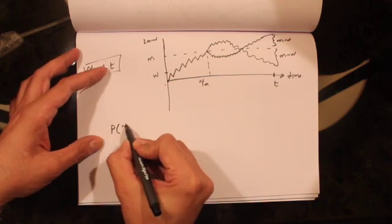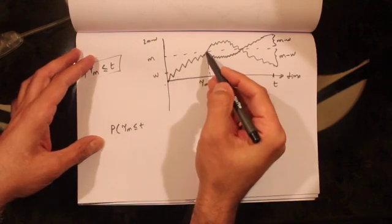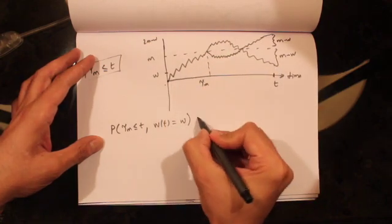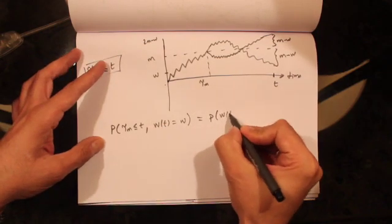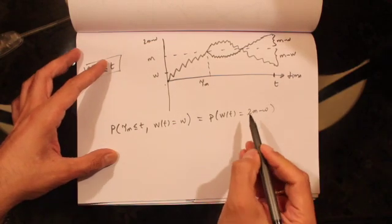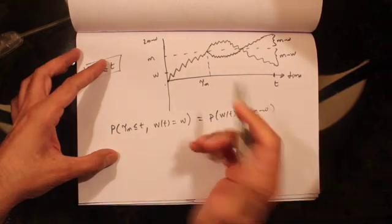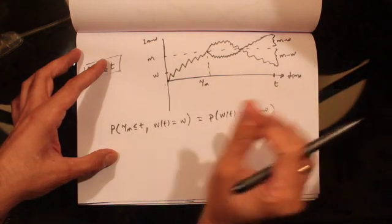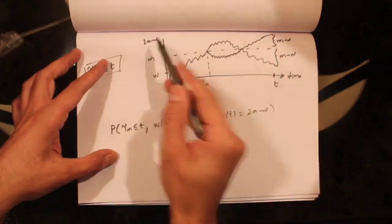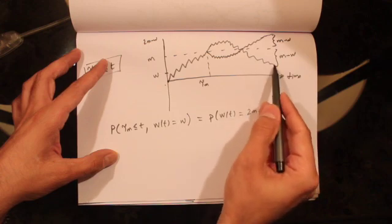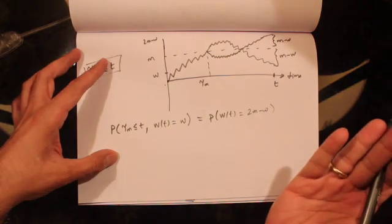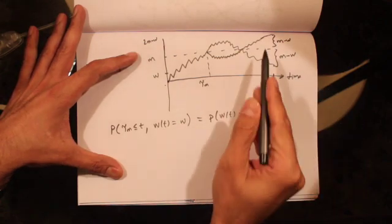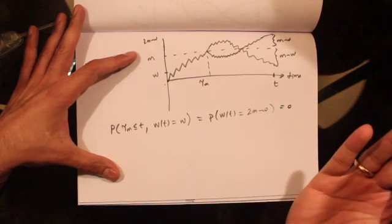Mathematically, we can say that the probability that tau M is less than T and W(T) equals W — meaning the path reaches level M before time T and ends at W — is the same as the probability that the Brownian motion reaches 2M minus W. These two paths result from the same up and down movements; they are reflections of each other. However, for Brownian motion, the probability of ending at exactly W or 2M minus W is zero.